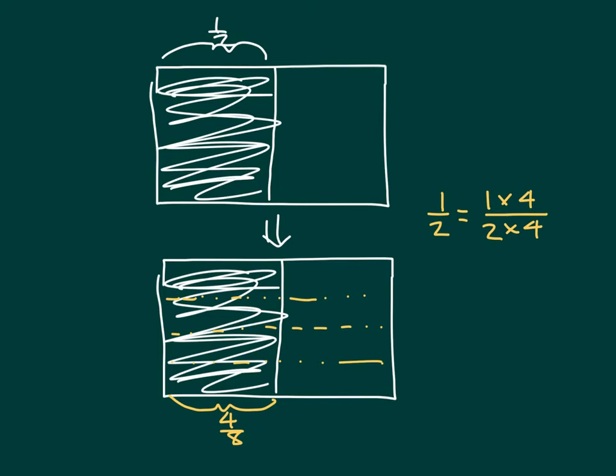One, two, three, four, five, six, seven, eight. And that's why that one-half does equal four-eighths. The amount that we have here, that area, is still the same. That's why those are equivalent there.